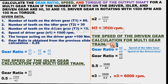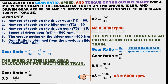We will calculate the speed of the driven gear for the multi-gear train. The gear ratio equals N2 divided by N3, which is the speed of the idler gear divided by the speed of the driven gear. Applying the given data: 0.5 equals 3000 divided by N3. Therefore N3 equals 3000 divided by 0.5, giving N3 equals 6000 RPM. The speed of the driven gear is 6000 RPM.